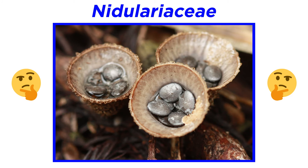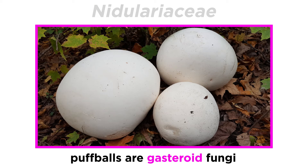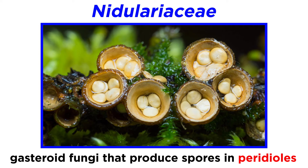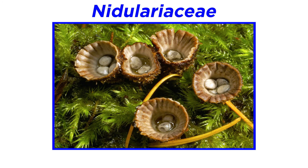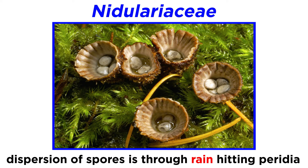Fungi in the family Nidulariaceae have unique structures. We previously discussed the gastroid puffballs of Agaricaceae. Bird's nest fungi are also gastroid because they develop their spores inside those small egg-like structures called peridioles. These peridioles have their basidia and basidiospores surrounded by a hardened wall. The nest-like structure that houses the peridioles is called the peridium. All bird's nest fungi have an interesting method of dispersing their peridioles, and therefore their spores. The nest-like peridium acts as a splash cup — when a raindrop hits the peridium slightly off-center, the raindrop expels the peridioles up to a meter away.